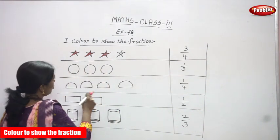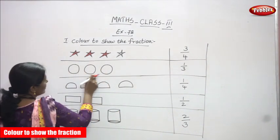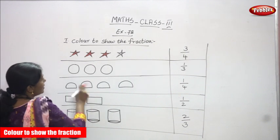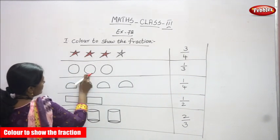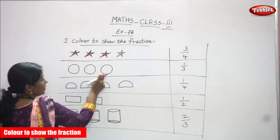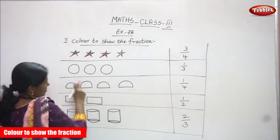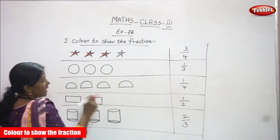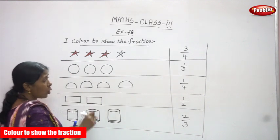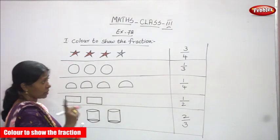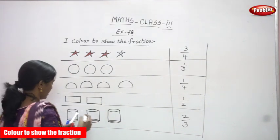Next, what is this? This is 3 circles. So 1st circle, 2nd circle, 3rd circle — so 3 circles. I have to color only 1 circle.